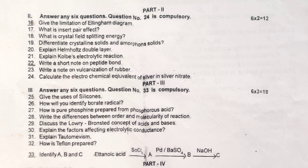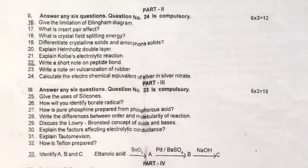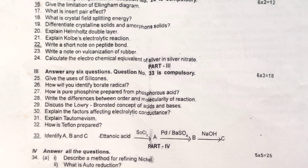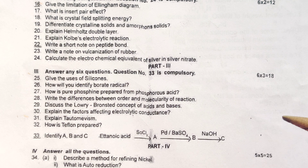For 2-mark questions, Question No. 24 is compulsory; answer any 6 questions — all are direct and easy. For Part 3, 3-mark questions, answer any 6 questions; Question No. 33 is compulsory — all questions are direct and easy.